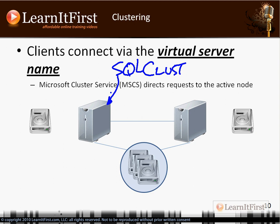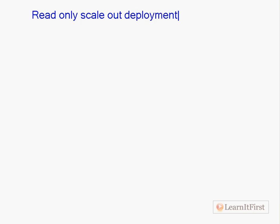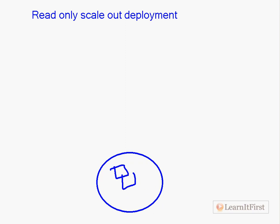Some of you might be thinking: can't I do network load balancing this way? No. There are two types of clusters in Windows: a failover cluster and a network load balancing cluster. This is a failover cluster — it is not a network load balancing cluster. Does Analysis Services support network load balancing clusters? Yes — that's what our scale-out deployment is. A scale-out is called a read-only scale-out deployment and is different from a failover cluster.